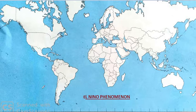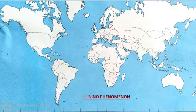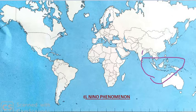El Niño in Spanish means 'a little child.' The basic definition of El Niño is the abnormal weather conditions in the Central Equatorial Pacific Ocean as well as the Eastern Pacific Ocean. A rise in temperature of about 0.5 to 1 degree Celsius in the Pacific Ocean results in El Niño conditions. This rise in temperature affects the trade winds in the Pacific Ocean as well as in the Indian Ocean, and affects the monsoon of India, Southeast Asian countries, Australia, and Africa.